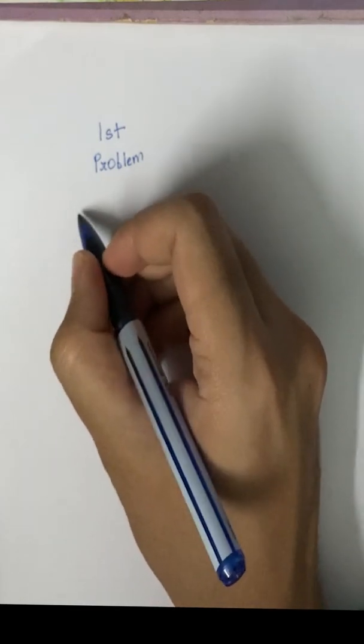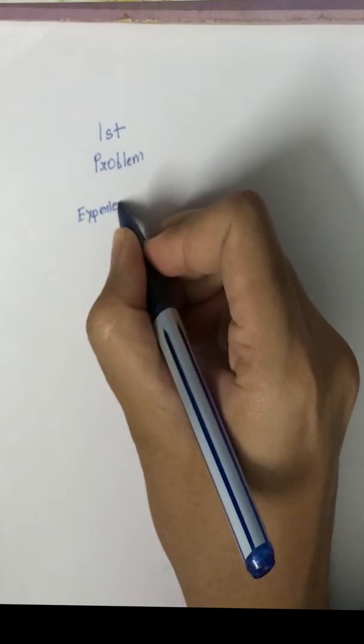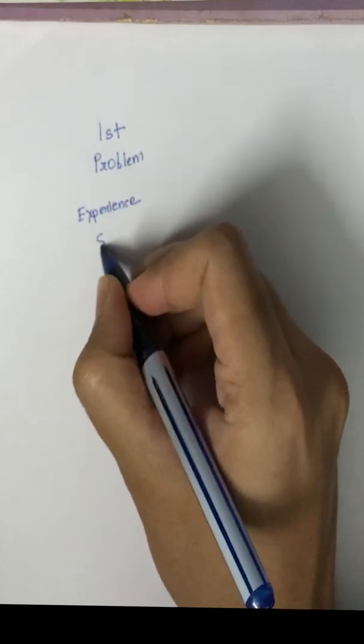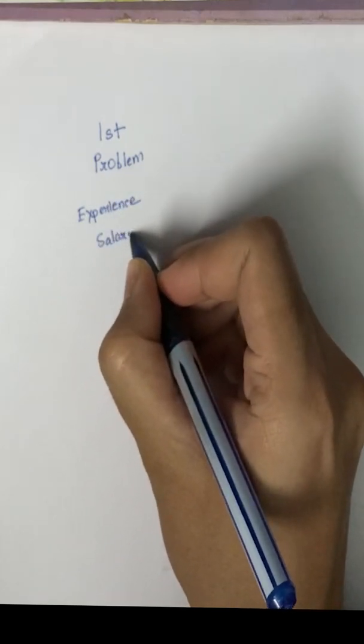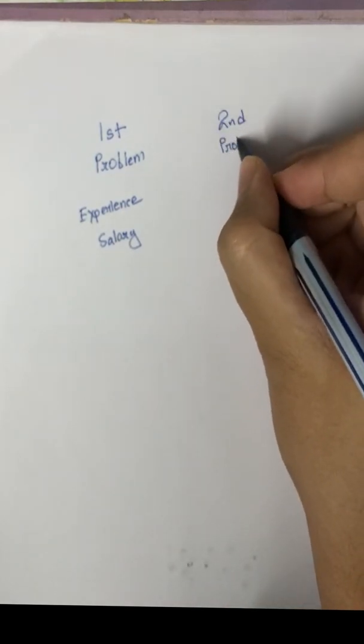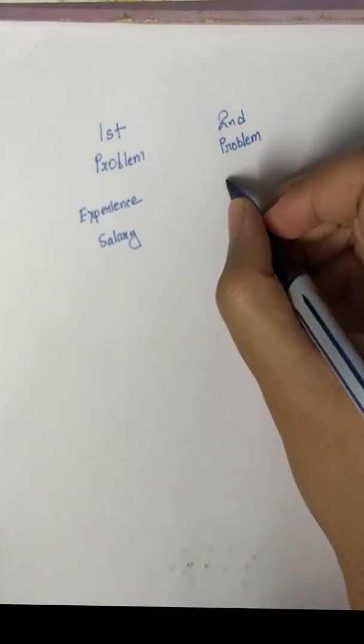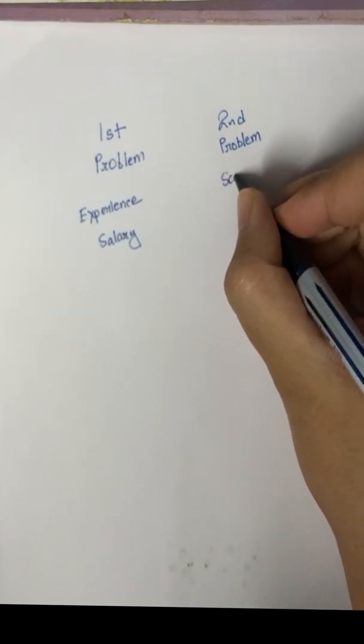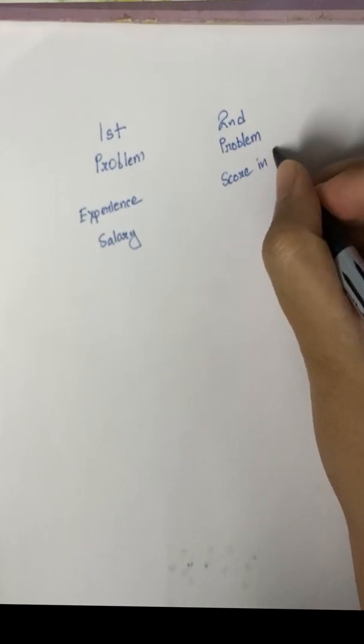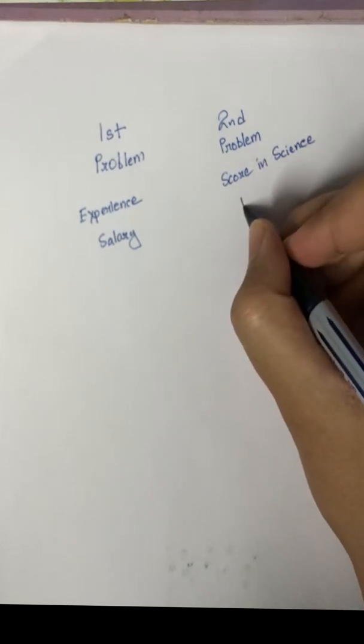So in the first problem statement, the two variables are experience and salary. And in the second problem statement, we are going to find out the score in science exam from the maths exam.